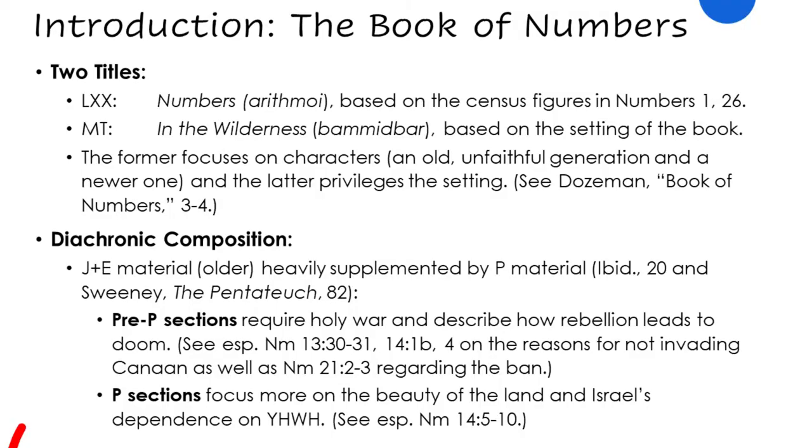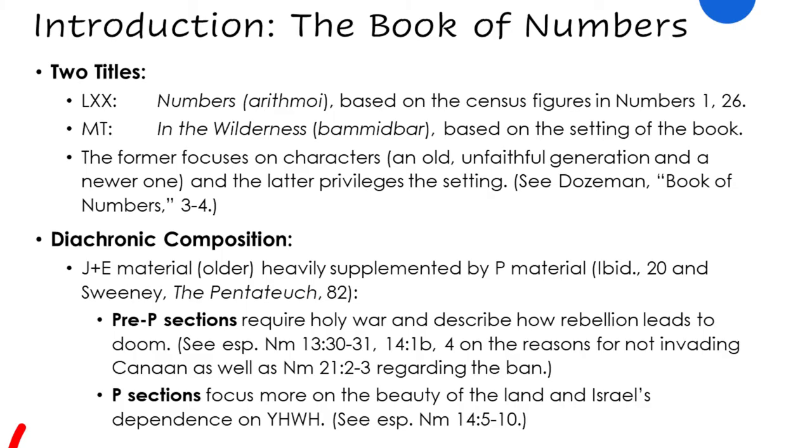What is this book? What are we reading? It's good to begin with a comparison of the Greek name for this book in the Septuagint versus the Hebrew name. The Septuagint gives this book the name Arithmoi, from which we get the English word arithmetic, and this is where the English name Numbers comes from. It's based on the census figures in the book — that title comes from just one of the features of this 36-chapter book. The Masoretic text gives it a more descriptive name, coming from the first word of the book in Hebrew, Bamidbar, which means 'in the wilderness' or 'in the desert,' and it's based on the setting of the book.